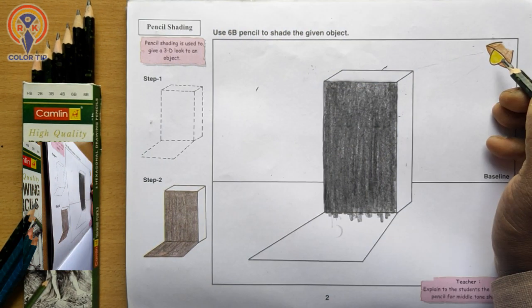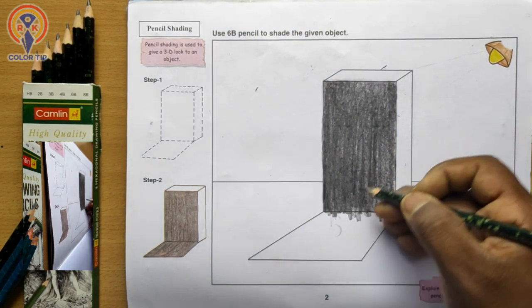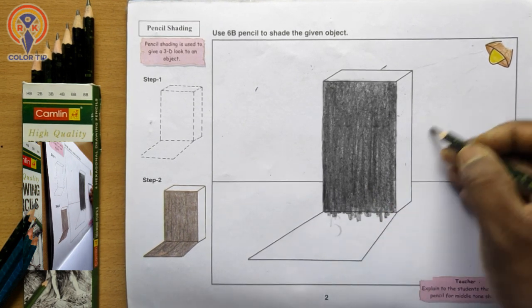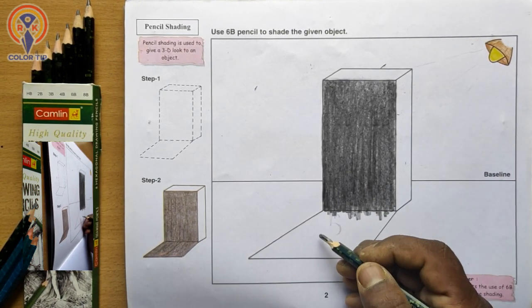In the same way, the light source is from this way, the shadow will be in the opposite direction. That means here. Let's shade this one.